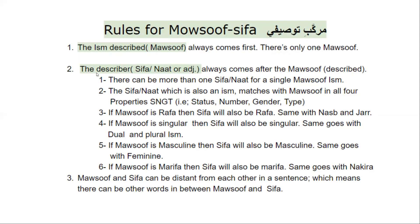Then the rules about the describer — sifah or na'at. The sifah or na'at always comes after the masuf. We just saw in the previous examples that the description always comes after the masuf. And it is important to keep in mind that there can be more than one sifah or na'at for a single masuf. The masuf is always one, but there can be multiple sifah for the same masuf.